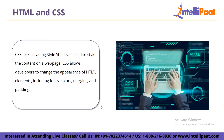CSS, or Cascading Style Sheets, is used to style the content on a web page. CSS allows developers to change the appearance of HTML elements, including fonts, colors, margins, and padding. CSS is a style sheet language, which means it uses rules to define the styles for different elements on a web page. Together, HTML and CSS are used to create the structure and style of a web page — HTML defines the content and CSS styles it.